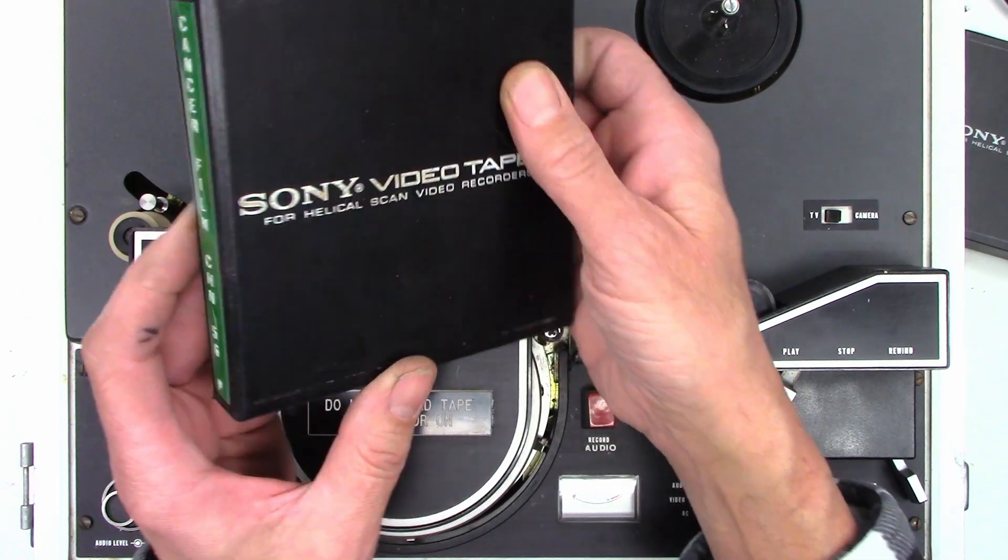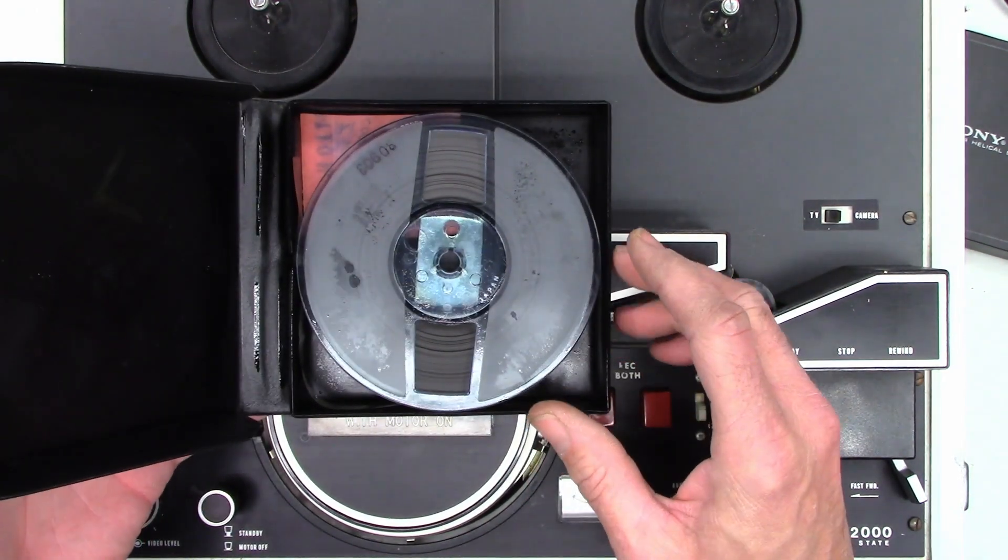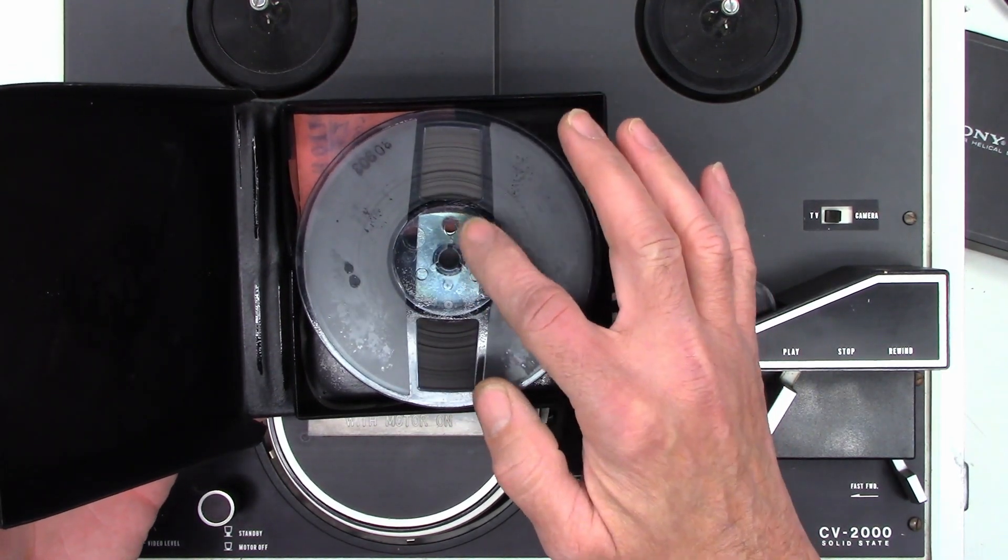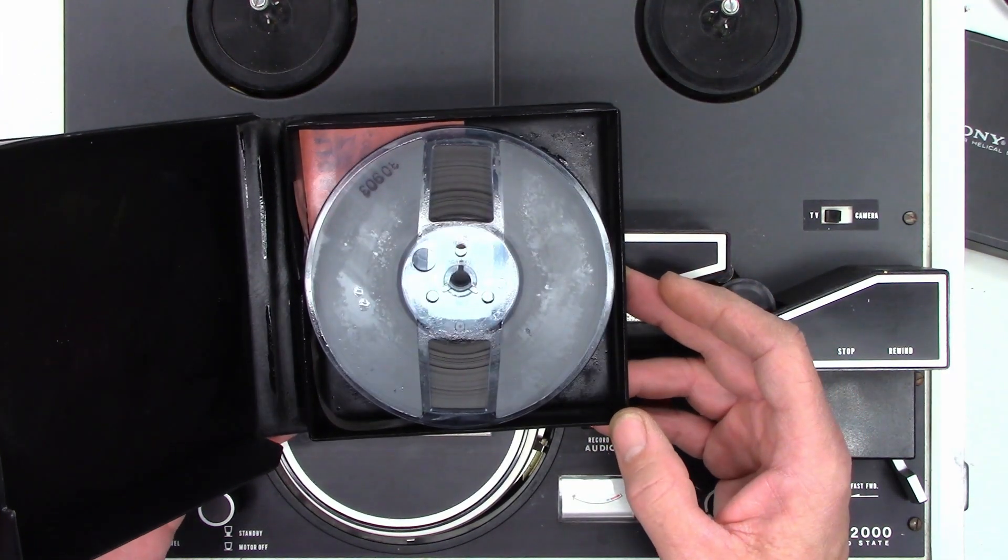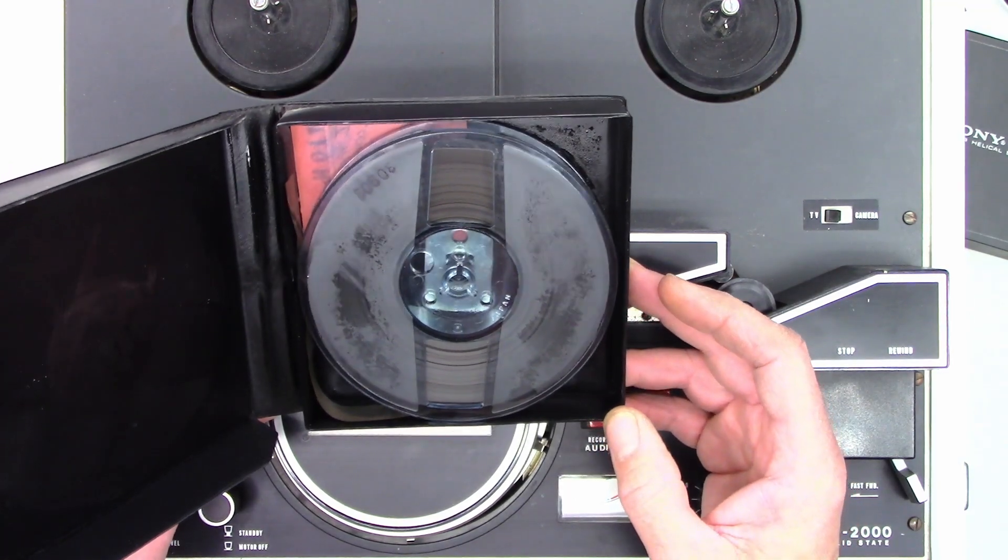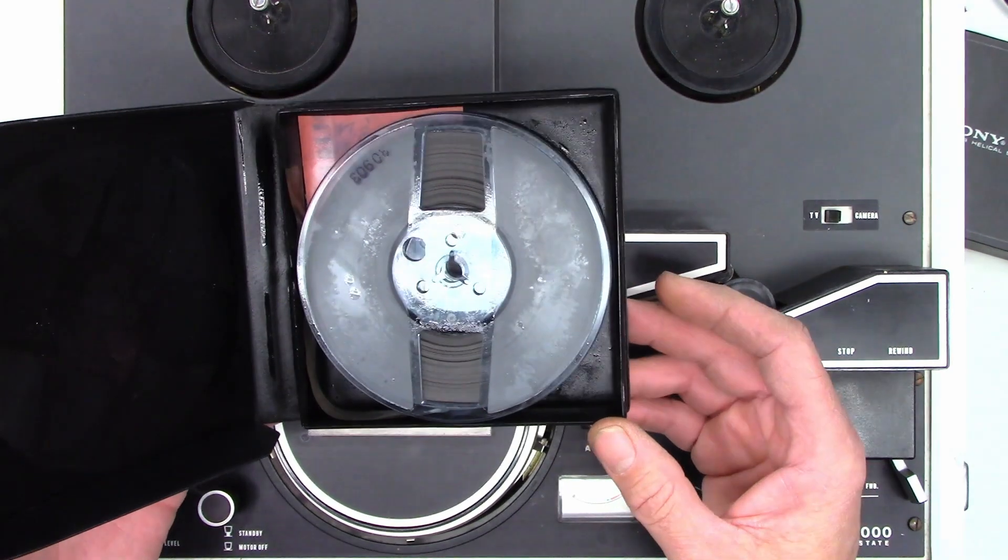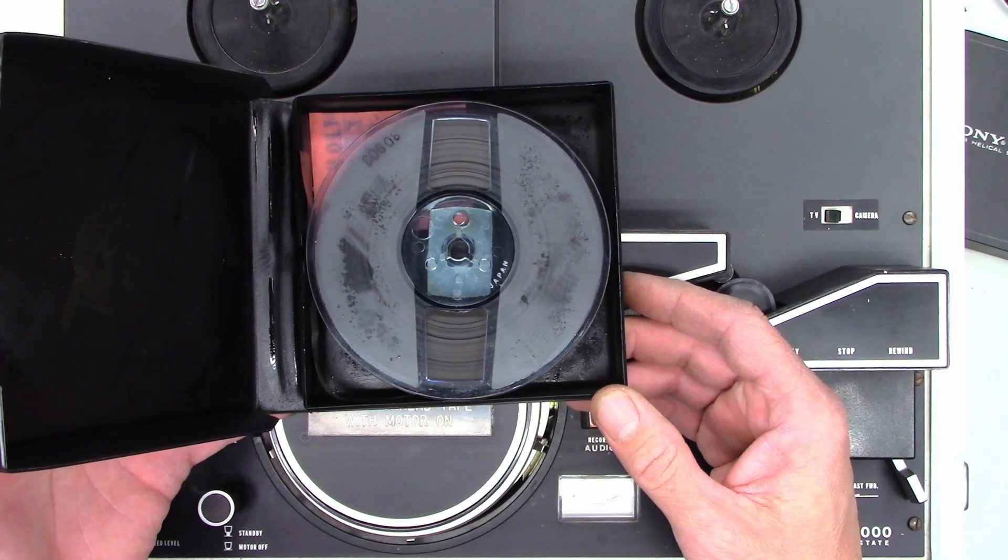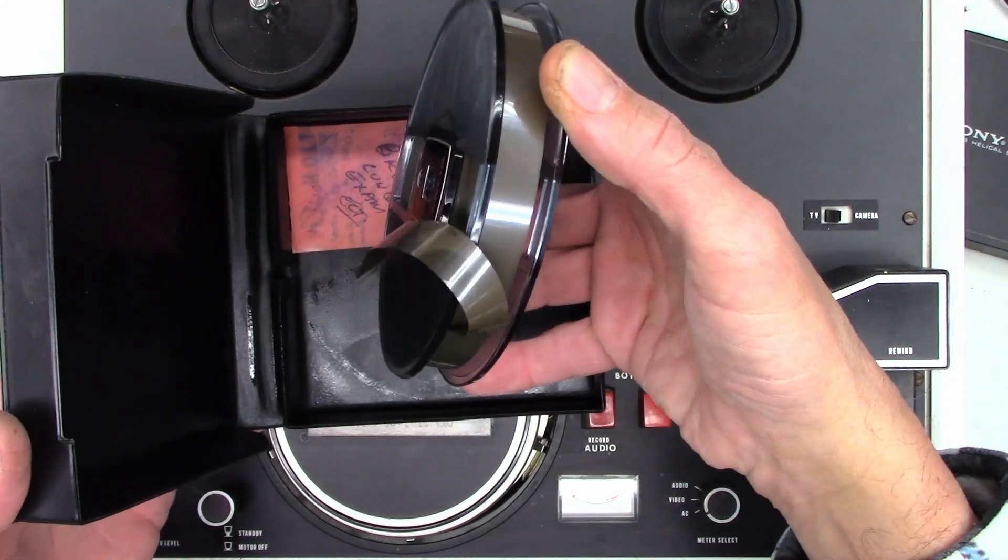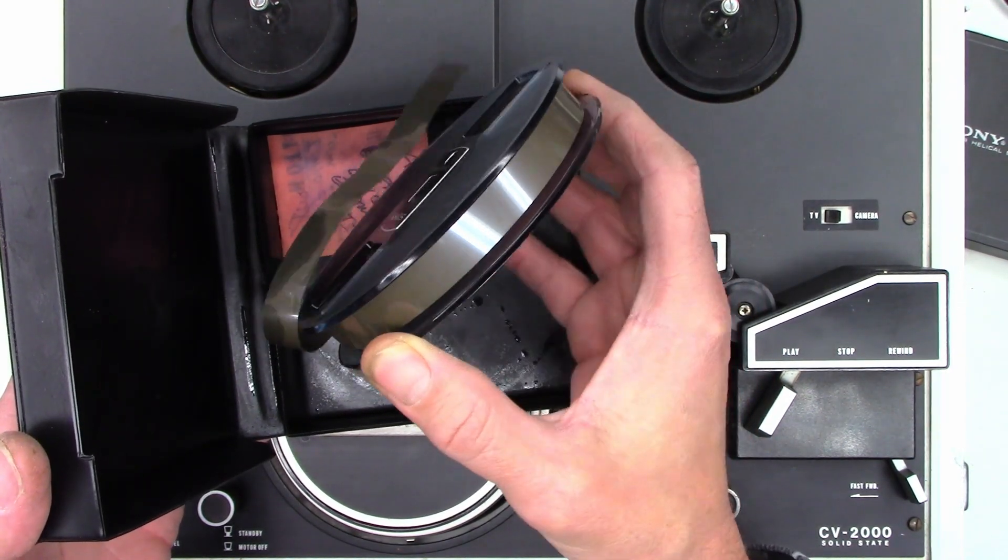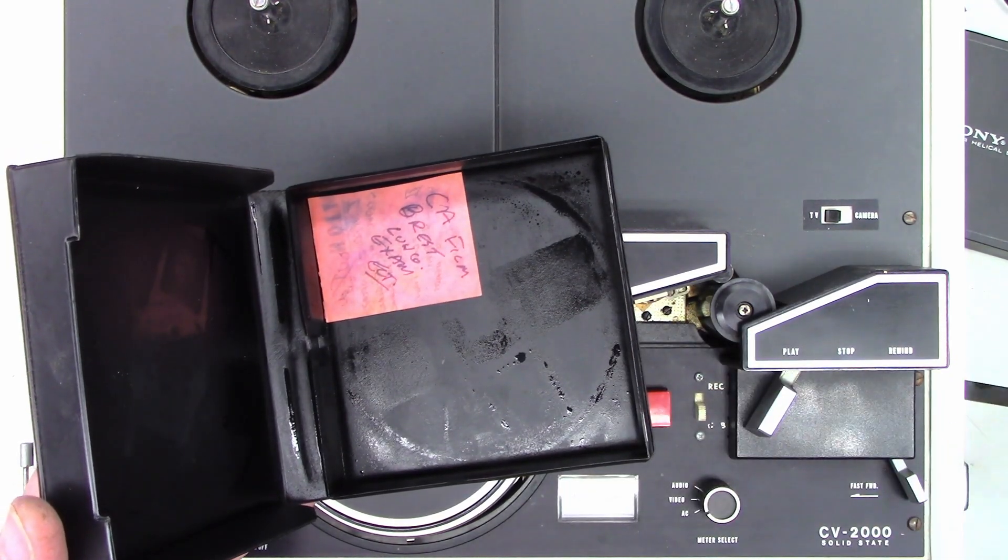This tape is in much worse shape - oily substance all over it. I'm not sure if the tape has been affected by this or not, but it is very greasy. You can just see the condition of this one - not good. Hopefully the whole tape is not like this, but you can certainly see what happened to the box at least.